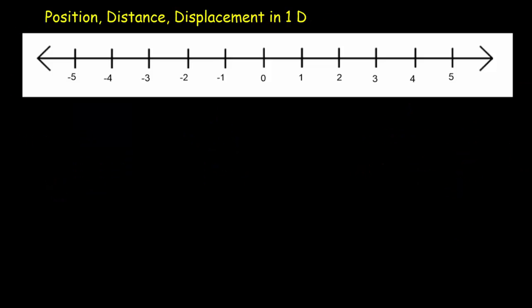Let's start by talking about the concepts that describe where we are: position, distance, and displacement. We're going to do it in one dimension, which simply means you're confined to move along a line — you could move left or right, or east and west, but no other direction.